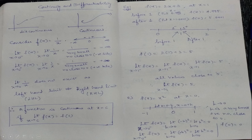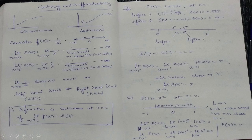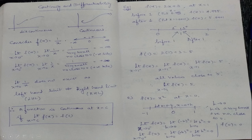Let me give another example and then come back to the definition of continuity. Example 1: f(x) = 2x + 3. Discuss the continuity at x = 1. On the number line, 1 minus represents the left-hand side of 1, and 1 plus represents the right-hand side. If I put a number just before 1 — for example 0.9999 — into this function, that gives the left-hand limit: 2 × 0.999 + 3 ≈ 4.9999.